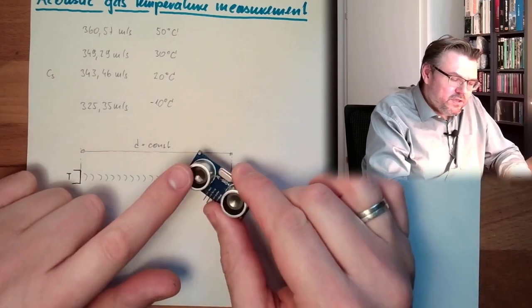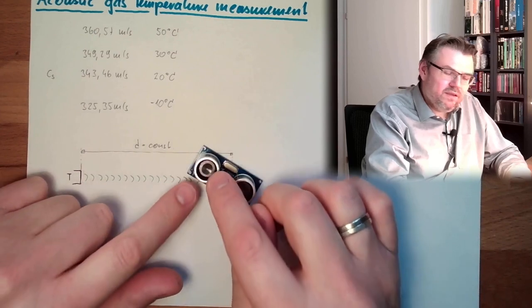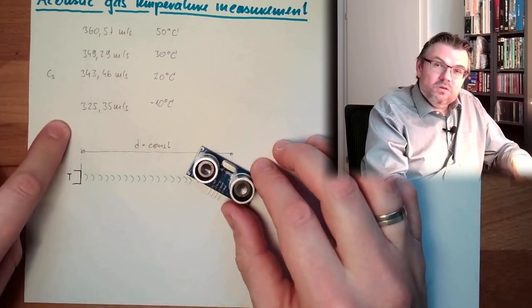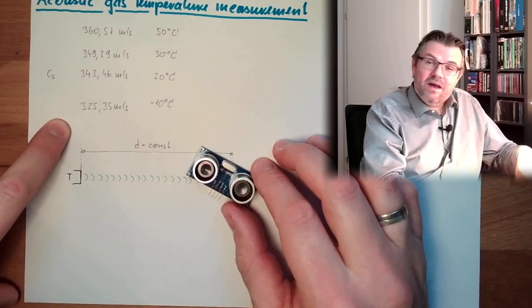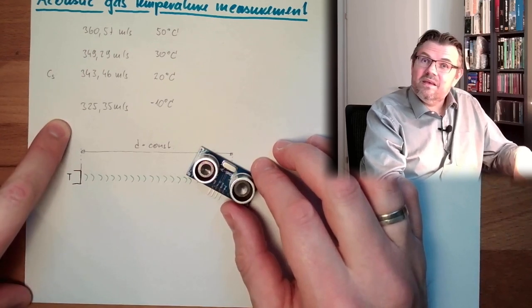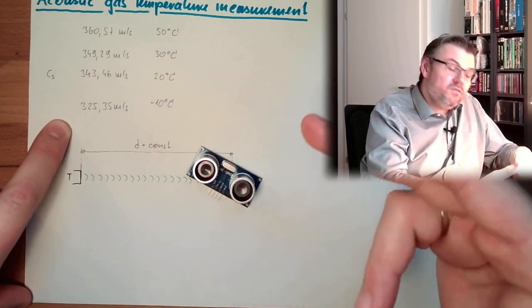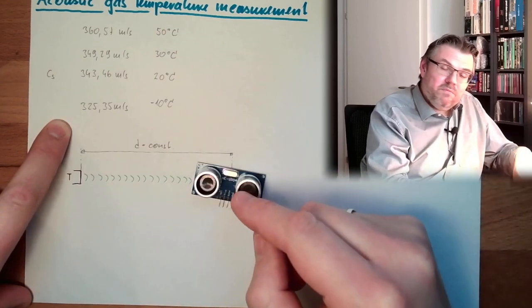If we want to measure distance with this thing, so we are waiting for an echo from some material, then this would influence, this is a source of error, systematic error for our measurement. When the speed of sound is changing, we have to correct this when we measure the distance.